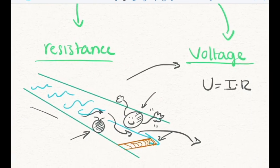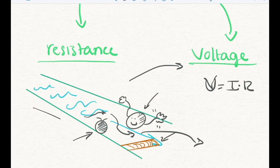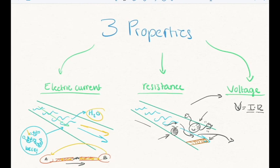And we actually have a term for that — that term is voltage. Voltage, denoted as V, is the current, denoted by I, multiplied by the resistance. Voltage is usually what we talk about when referring to the amount of power that should be supplied in a circuit.